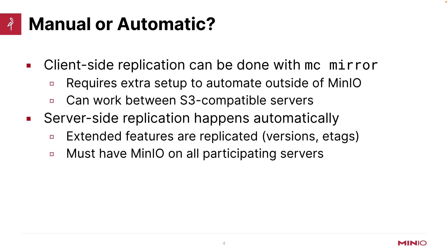The only issue with MCMirror is that when you're doing an MCMirror, let's say you're trying to replicate data from San Francisco to New York — if you happen to be living in Texas or Omaha or wherever, MCMirror is going to download that object to your local system and then upload that object to your other system in New York. So there's an extra step involved. If you are using server-side replication, however, San Francisco and New York are just going to talk to each other without any intermediary steps. This also replicates extended features like versions and e-tags, which is something you're not going to get with MCMirror.